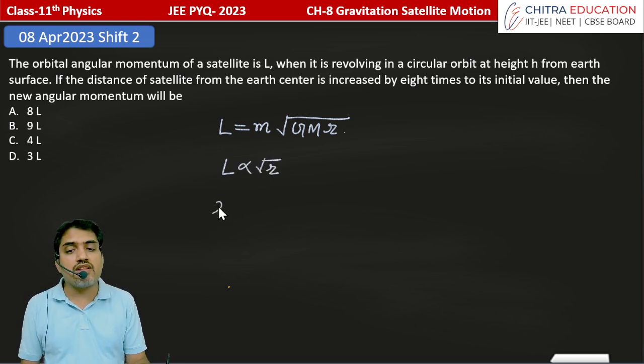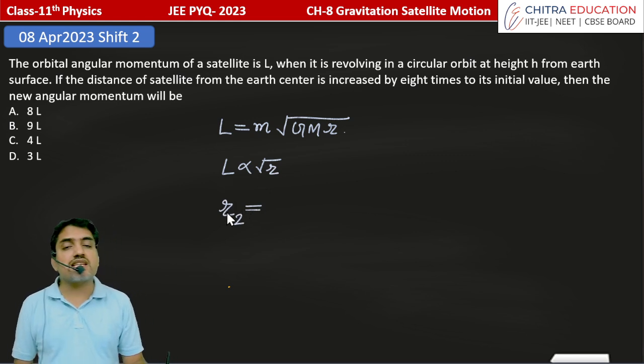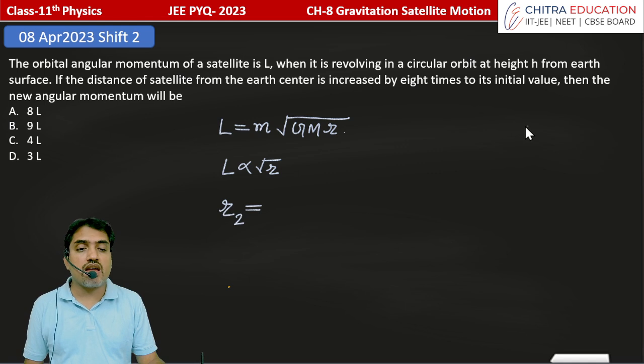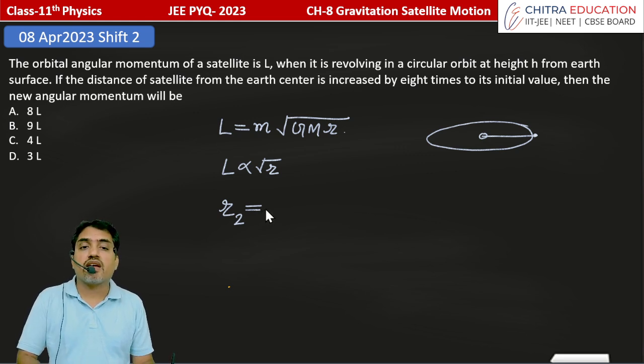If we talk about R1 and R2, then here R2, the distance in the second final condition from the center - the distance from Earth's center in the second case R2 - has been increased, increased by 8 times.